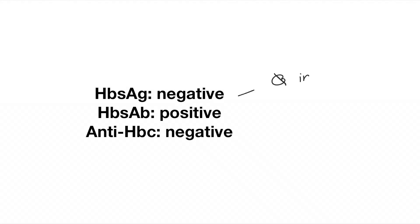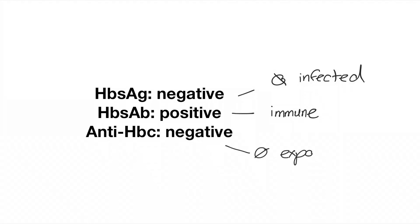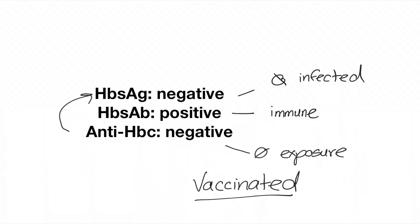For our third set of labs, the surface antigen is negative — person is not infected. The surface antibody is positive — they are immune. The core antibody is negative, meaning the person has not been exposed to the virus. The only way to get these labs is if the person has been vaccinated against hepatitis B.